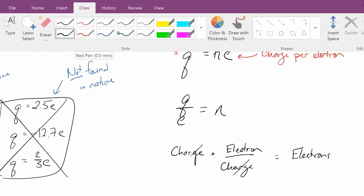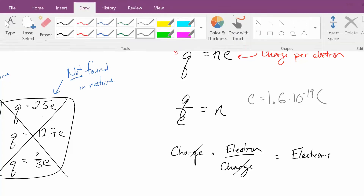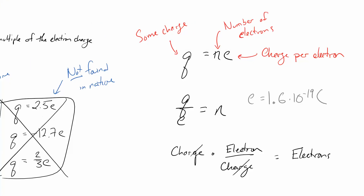This electron charge e is a tiny number: 1.6 times 10 to the negative 19th coulombs — itty bitty tiny. Because we're dealing with such small numbers for charge, or such large numbers of electrons, it's going to be important to talk about scientific notation. So if you need a refresher on that, you can go find the screencast on scientific notation.